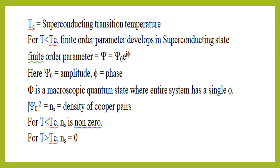In superconducting materials, Cooper pairs can be found. A Cooper pair is a pair of two electrons — one spin-up and one spin-down. Normally there are repulsive forces between two electrons, but due to lattice distortion there is an attractive force between the two electrons in the Cooper pair. For T less than TC, Cooper pairs can be found, so Nc is non-zero. Above TC the material is in the normal state, so Cooper pairs cannot be found and Nc equals zero.